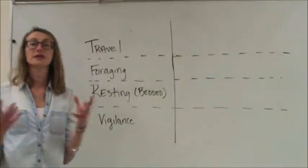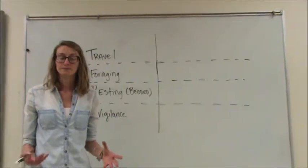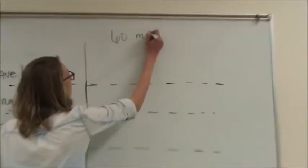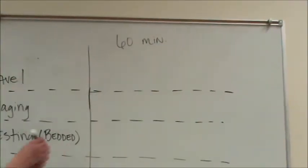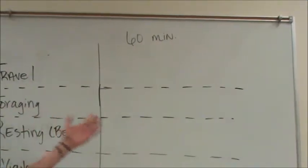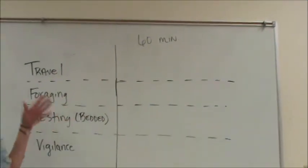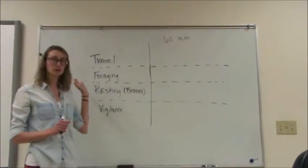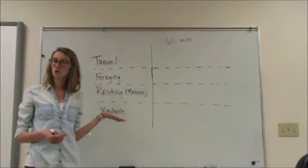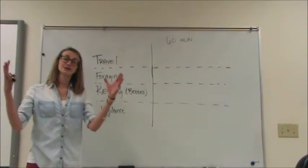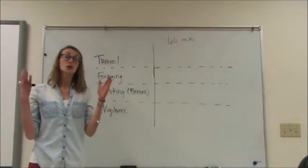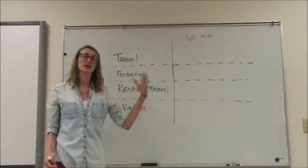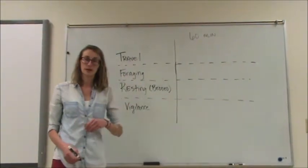To begin understanding your question, let's start with an hour of observation. So 60 minutes, and we can simply mark within that 60 minutes every time we see an individual or a focal individual, if you just want to focus on one animal, traveling, foraging, bedded, or being vigilant. Then we have a segment of time that we can actually divide and portion out our behaviors. So the frequency in a 60-minute period the individuals spent eliciting each individual behavior.